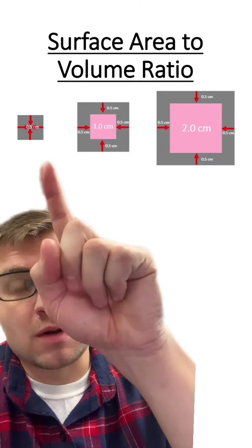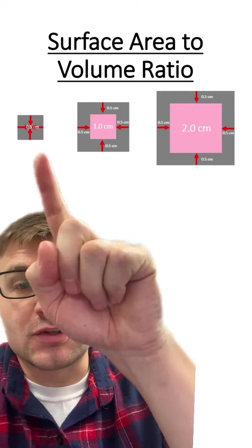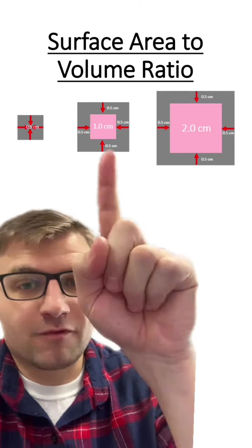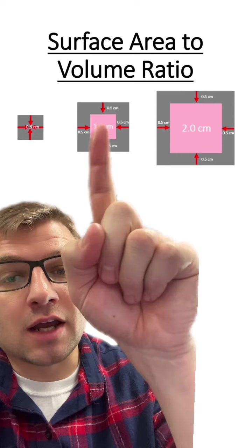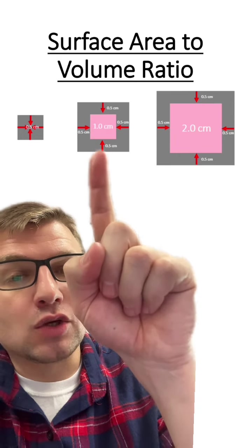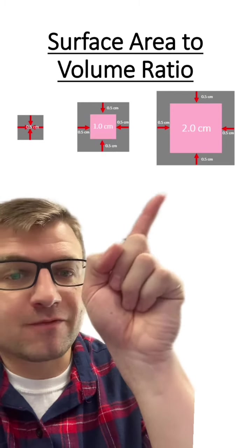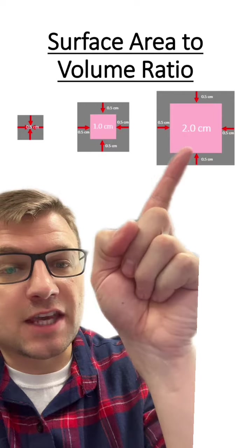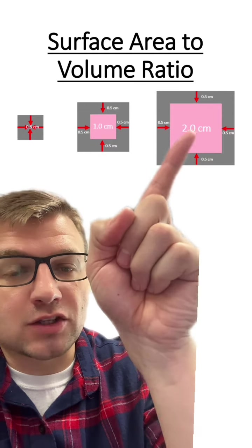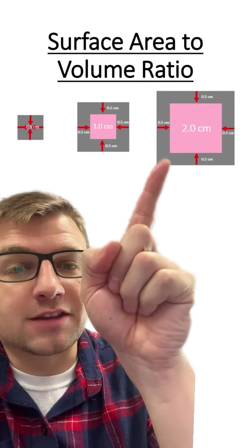So again, for your smallest cube, the 1x1x1, it's totally diffused, so its total volume is the diffused. For your 2x2x2, your undiffused is 1x1x1. You have to take the total volume minus this 1x1x1 volume. For your 3 centimeter cube, you have to take the total volume minus this 2x2x2 volume, and then you're going to get the diffused volume.